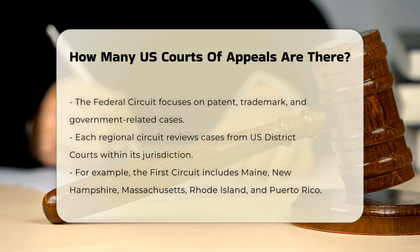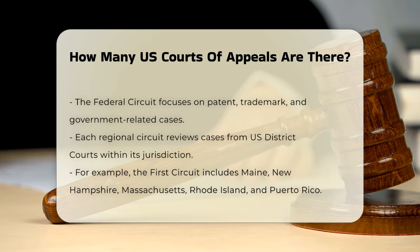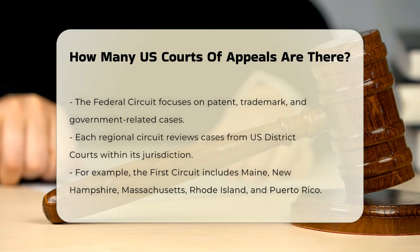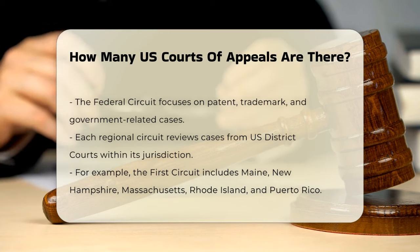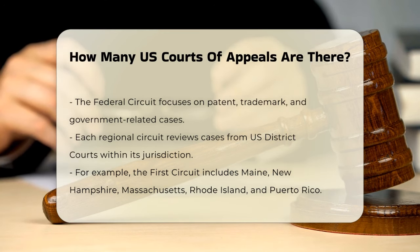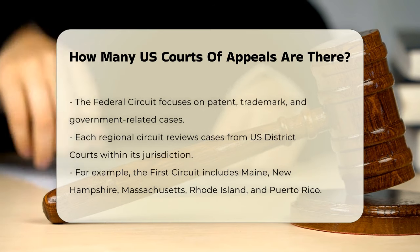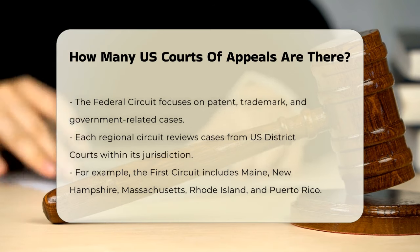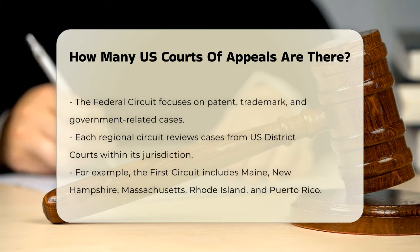Each of these circuits has its own Court of Appeals that reviews cases decided in the U.S. District Courts within that circuit. For instance, the First Circuit covers Maine, New Hampshire, Massachusetts, Rhode Island, and Puerto Rico, while the Ninth Circuit covers a large area including California, Oregon, Washington, and several other states.